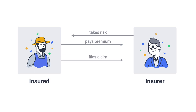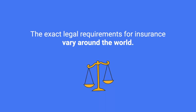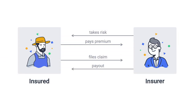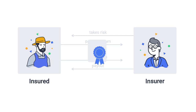If a claim occurs and is accepted by the insurance, the insurance creates a payout to reimburse the agreed financial amount. The exact legal requirements for insurance vary around the world. In most countries, an insurance company requires a state-issued license. The insurance provides a contract, which is called an insurance policy. It details conditions and circumstances under which the insurance makes payouts to cover losses of the insured that occurred from accepted claims.